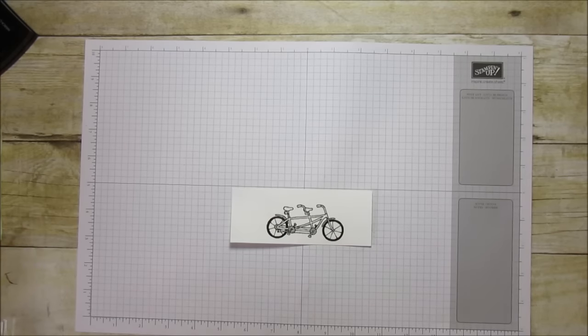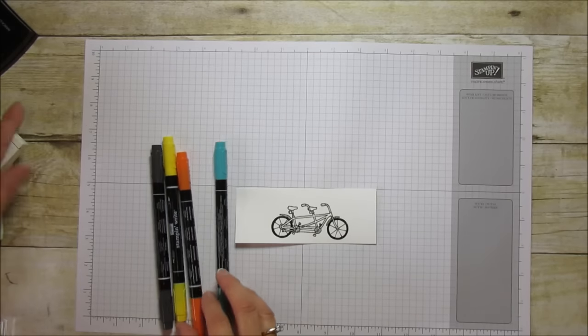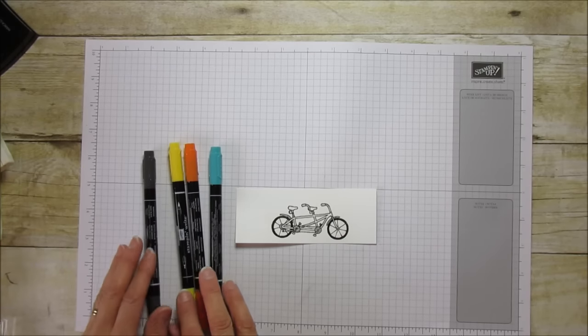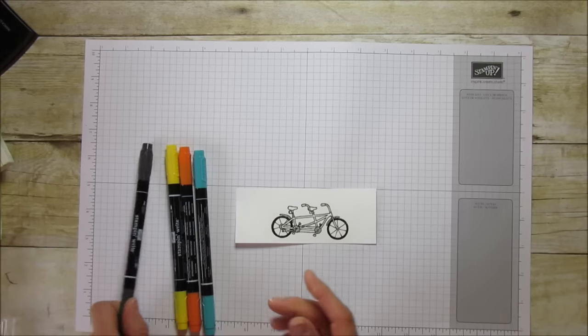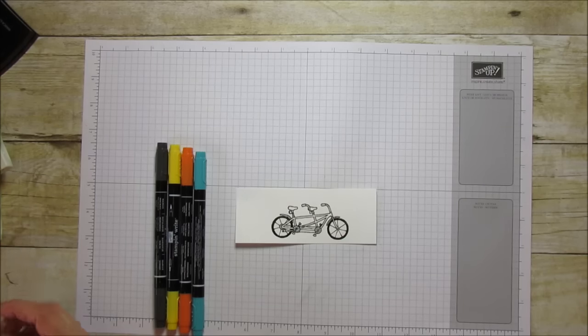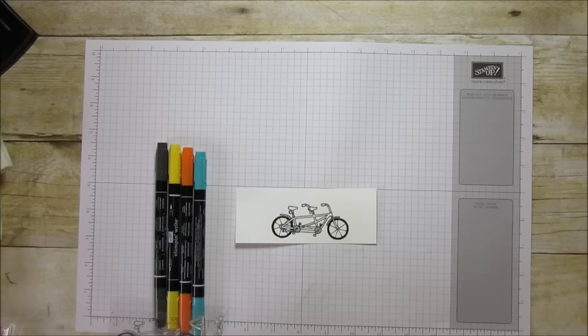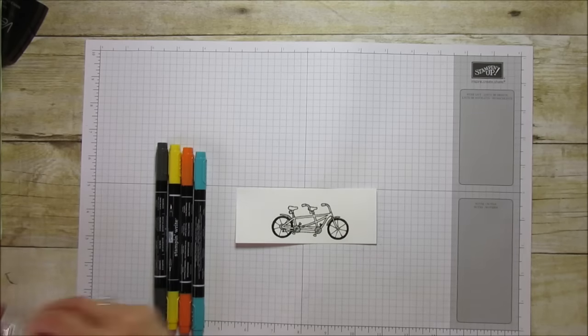Next, I'm going to take some Stampin' Bright markers - I've got Bermuda Bay, Tangelo Twist, Daffodil Delight, and black. I'm going to stamp our little bird. I forgot to get him out and I'm going to stamp him with Crushed Curry.